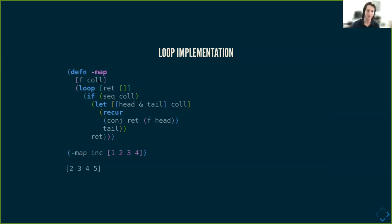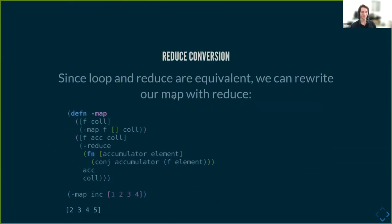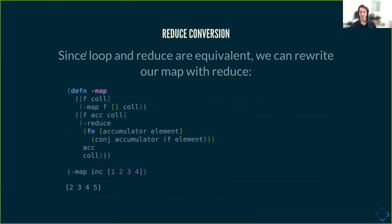I have accidentally corrupted the code here — I will correct it later. But we can still convert it to reduce. We have said previously that loop and reduce are equivalent, so we can rewrite our map implementation using reduce.